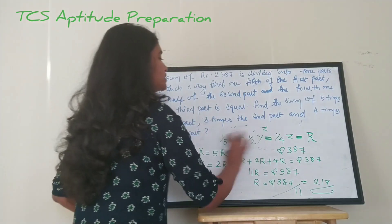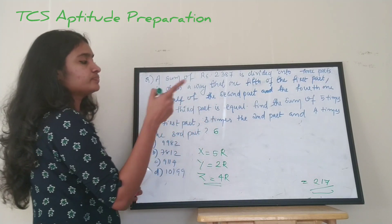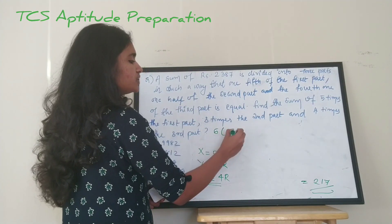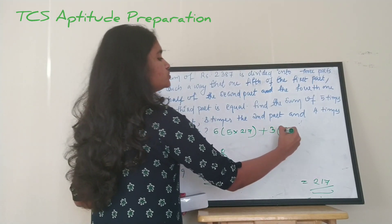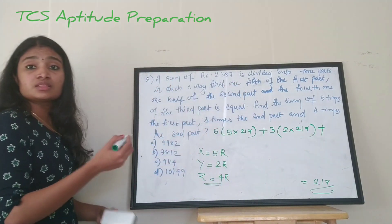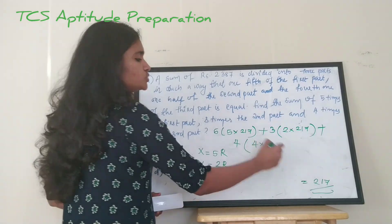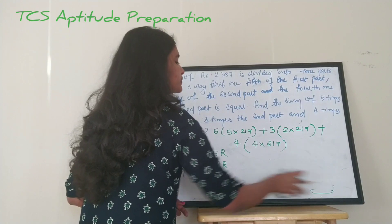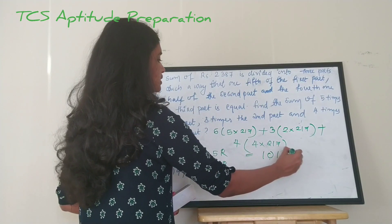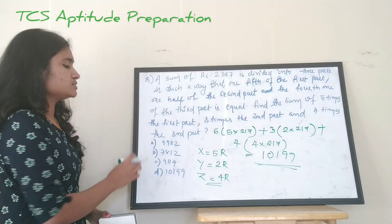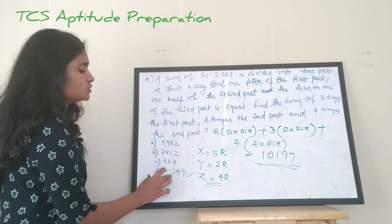So we need five times the first part: 5 into 5r, plus three times the second part: 3 into 2r, plus four times the third part: 4 into 4r, with r equal to 217. Solving this gives the answer 10199. The correct answer is option D: 10199. The other options are A: 9982, B: 7812, C: 914.